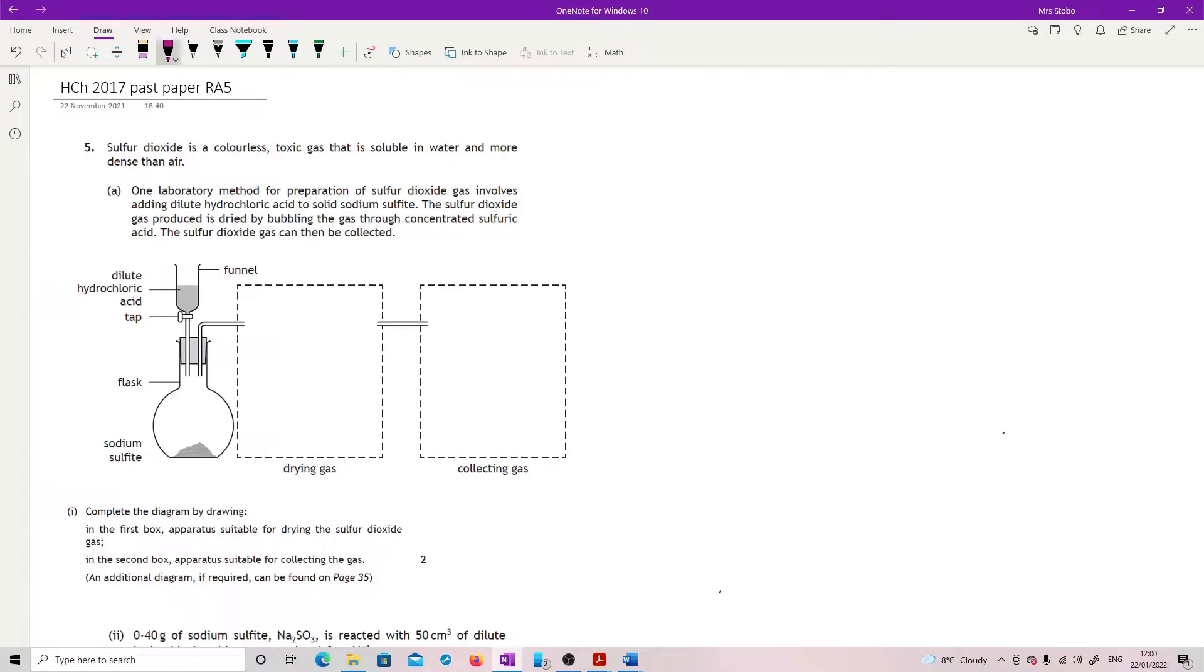Complete the diagram by drawing apparatus suitable for drying the sulfur dioxide, and in the second box apparatus suitable for collecting the gas. It's worth two marks, one for each. So first thing you have to do for drying the gas, it says by bubbling the gas through concentrated sulfuric acid. There's lots of different ways you can do this.